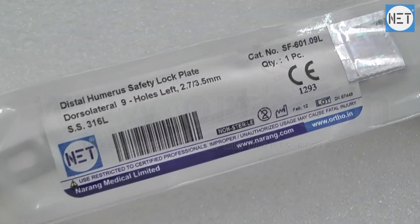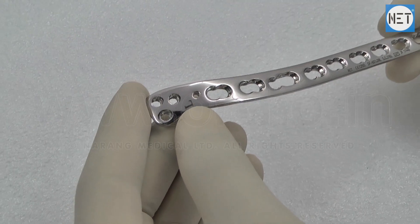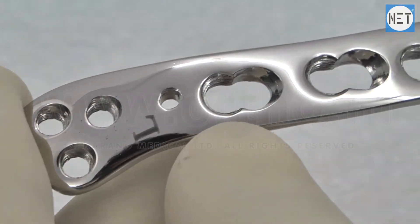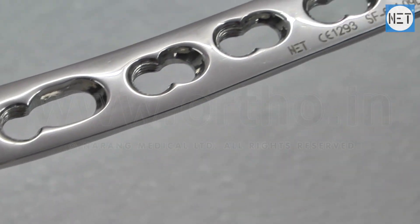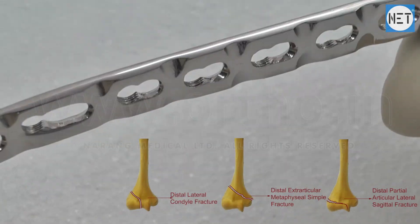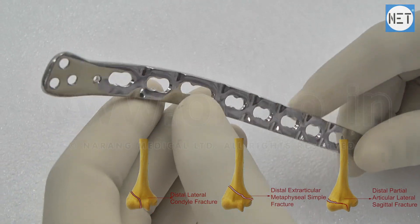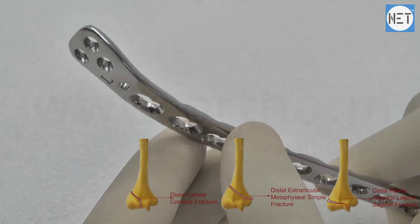Net Brand Distal Humerus Safety Lock Plate 2.7-3.5mm Dorso-Lateral. These safety lock plates are primarily used for fixation of fractures of distal, lateral condyle, distal extra-articular metaphysical simple, and distal partial-articular lateral sagittal fractures of humerus.